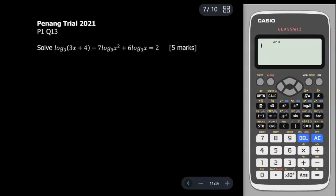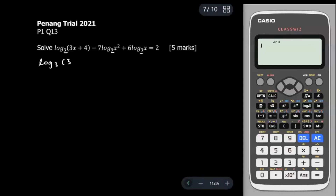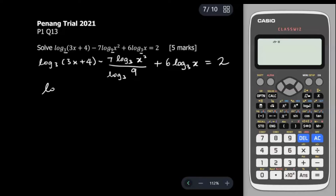Let's look at this question from Penang Trial 2021 Paper 1, Question 13 — this is 5 marks, so the working will be very long. The bases we have are base 3, base 9, and base 3, which means we're going to change all logs to base 3. The log base 3 term is already in base 3, so we write it as-is. The log base 9 term we convert using change of base.